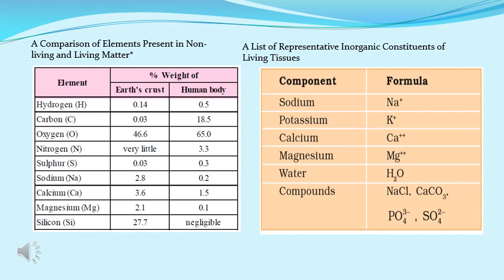The second table shows the inorganic compounds present in living tissue: sodium ion, potassium ion, calcium ion, magnesium ion, water, and compounds like sodium chloride, calcium carbonate, phosphate and sulfate. These are the various elements that are present in a cell that help in the functioning and the formation of various structures within the cells. In this video we have studied about the chemical analysis of organic and inorganic compounds.